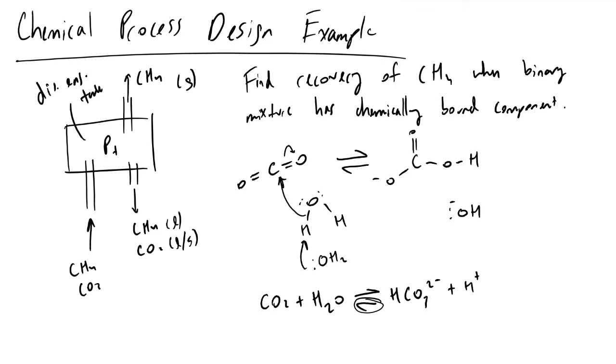But if we make our solution basic, if we supply hydroxide ions to our solution in our disengagement vessel, what will happen is these hydroxide ions will deprotonate the bicarbonate to form carbonate. And carbonate will resemble a molecule that looks like this. It's gonna have a total charge of minus two.